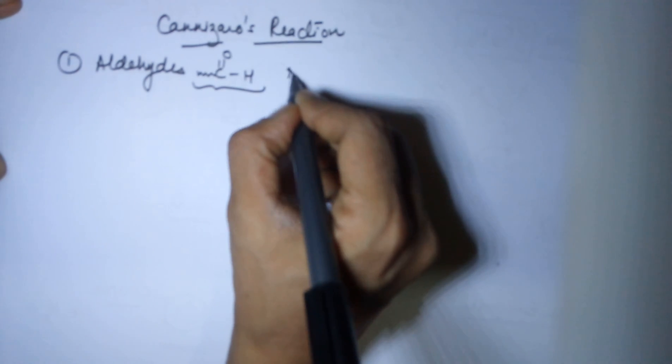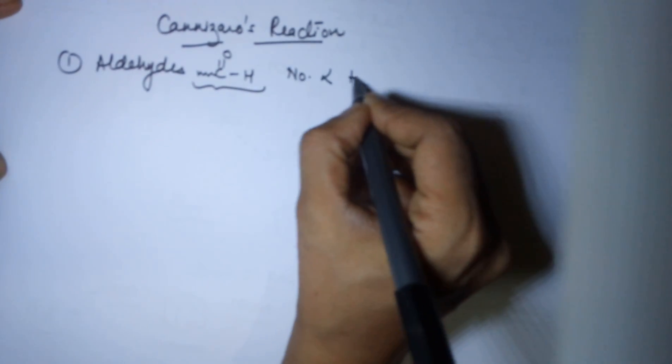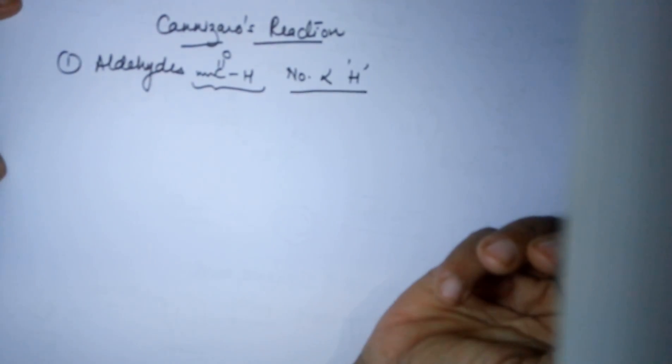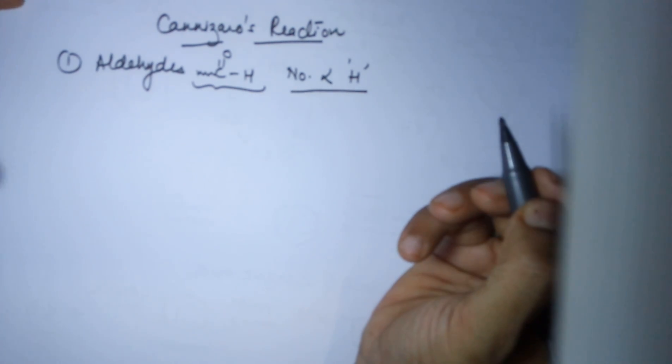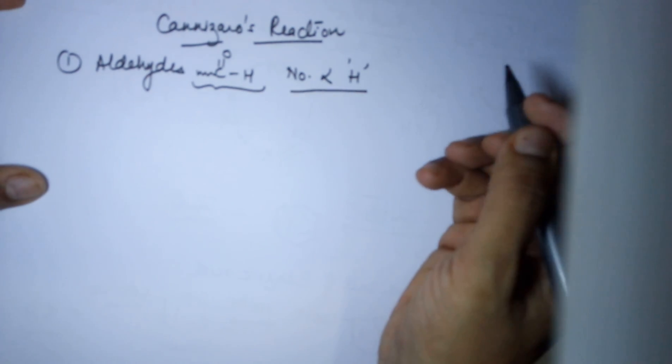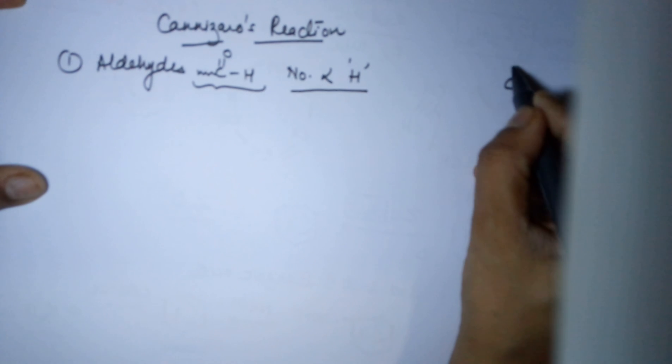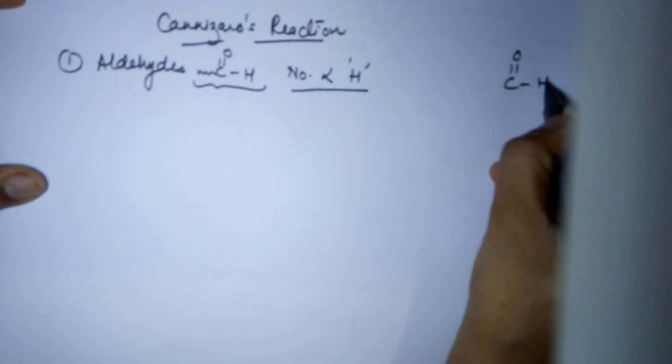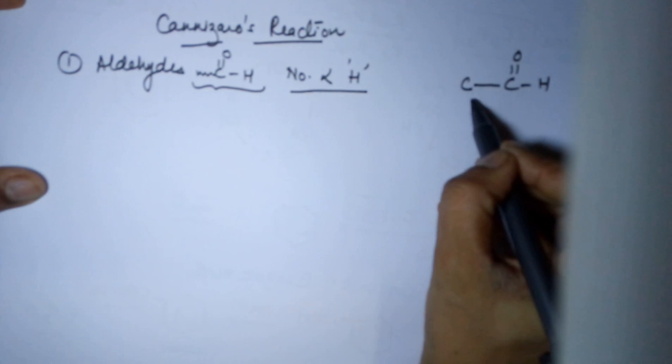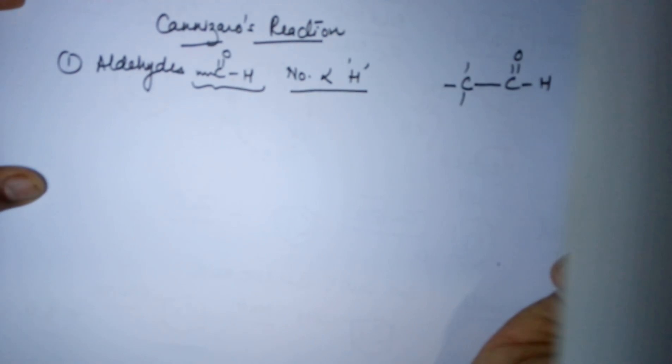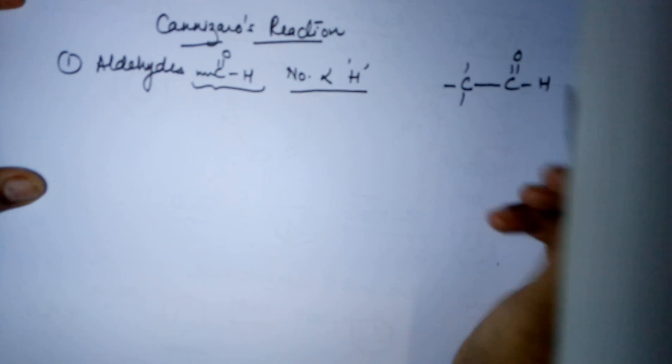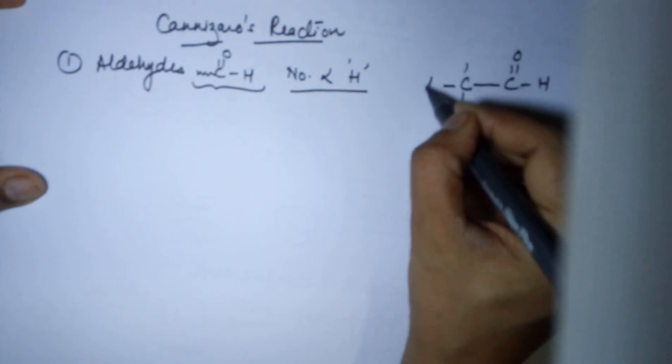That is, it should have no alpha hydrogens. Now what are alpha hydrogens? Supposing I have an aldehyde group like this, then the adjacent carbon should not have any hydrogen attached to it, which means it could have R groups.